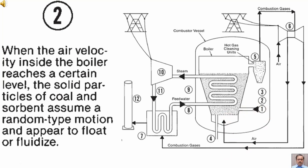Tag number 2. When the air velocity inside the boiler reaches a certain level, the solid particles of coal and sorbent assume a random type motion and appear to float or fluidize.